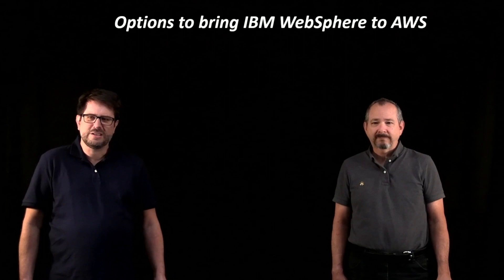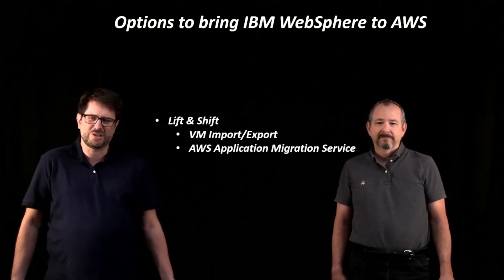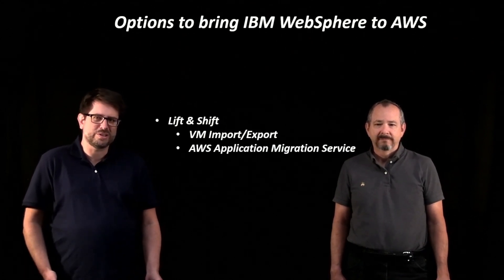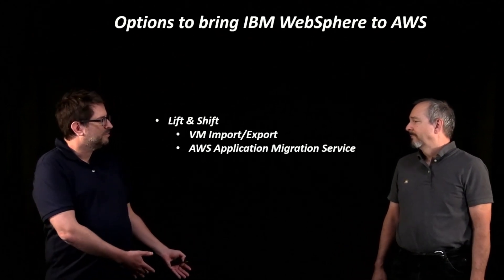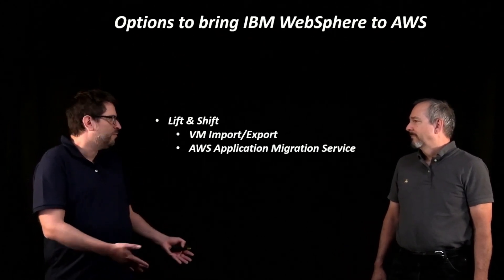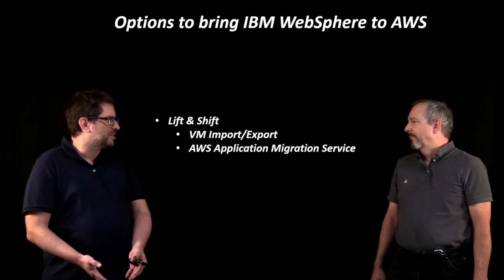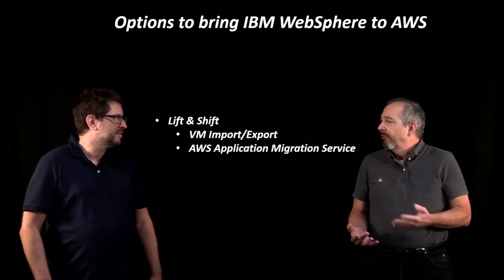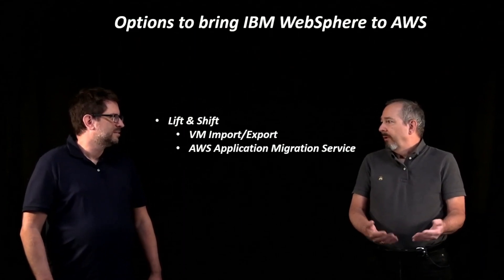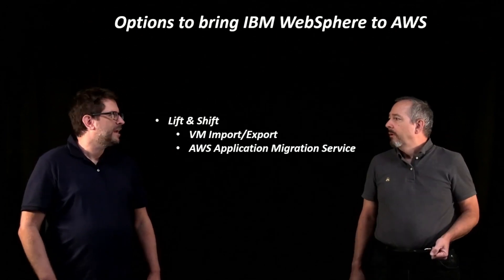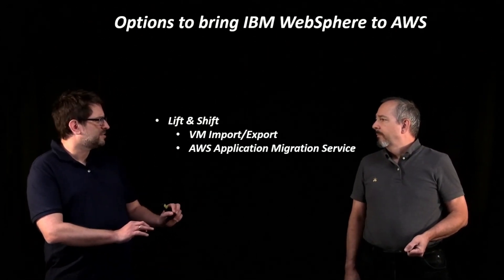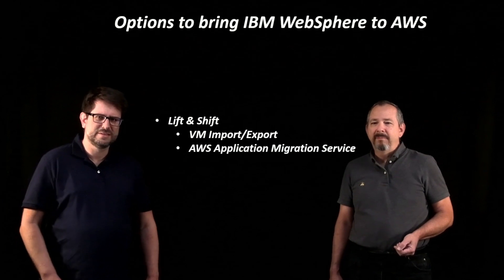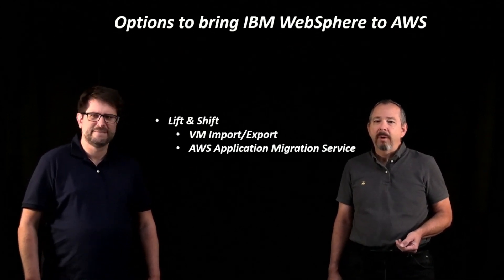Some of the options we're going to talk about today: customers can do a lift and shift of their WebSphere servers to AWS. They can use AWS VM Import Export to bring in their own machine images. They can bring their golden images from on-prem, from VMware for example, and import those as AMIs on AWS, and they can spin up EC2 instances. It's just a server-to-server move, and IBM tells us the licenses will transfer one-for-one unless they're on an ELA. There is a metric — something like 70 PVUs is the typical metric — and there's a conversion formula your AWS or IBM rep can provide.